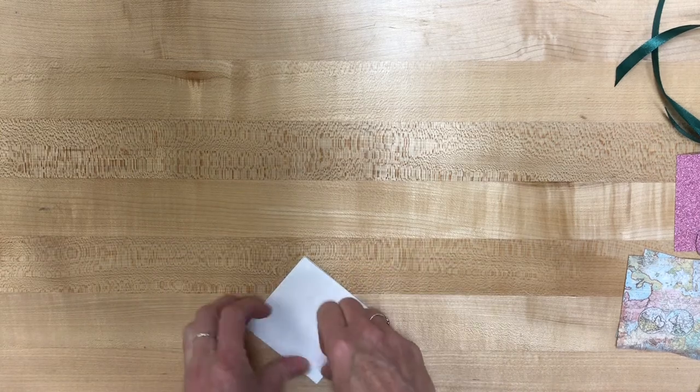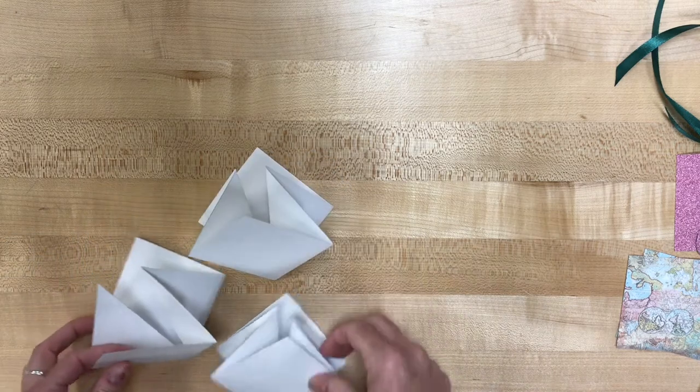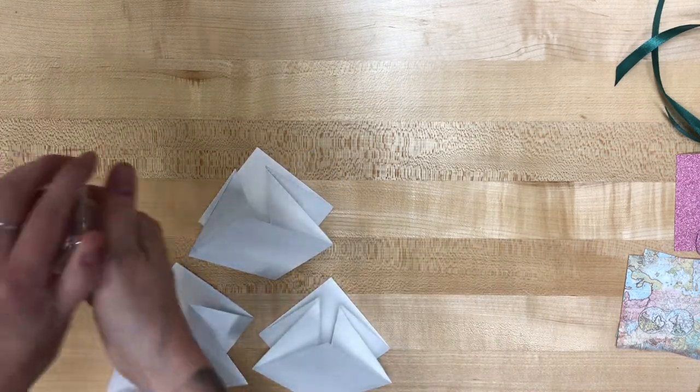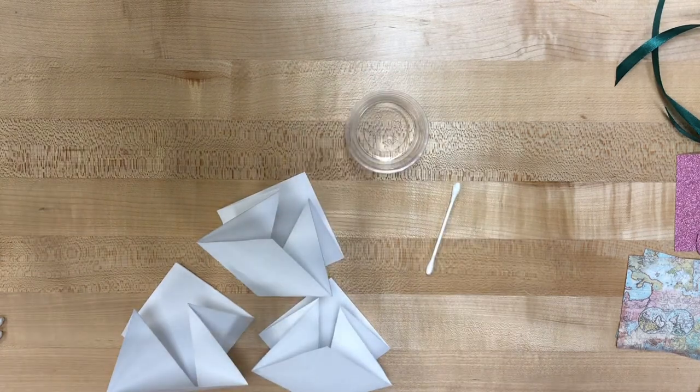It kind of all comes together once you pinch on that diagonal fold line and we're gonna want to do that to all three of our sheets of paper and then we're gonna bring out the glue.